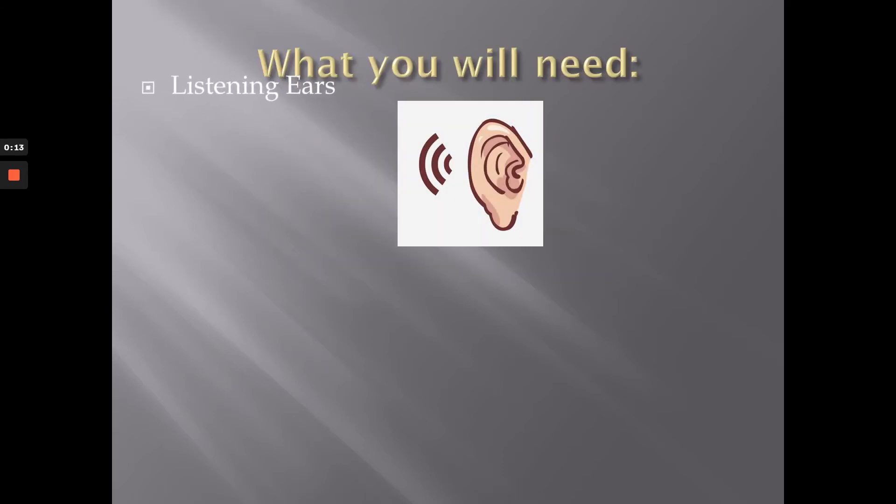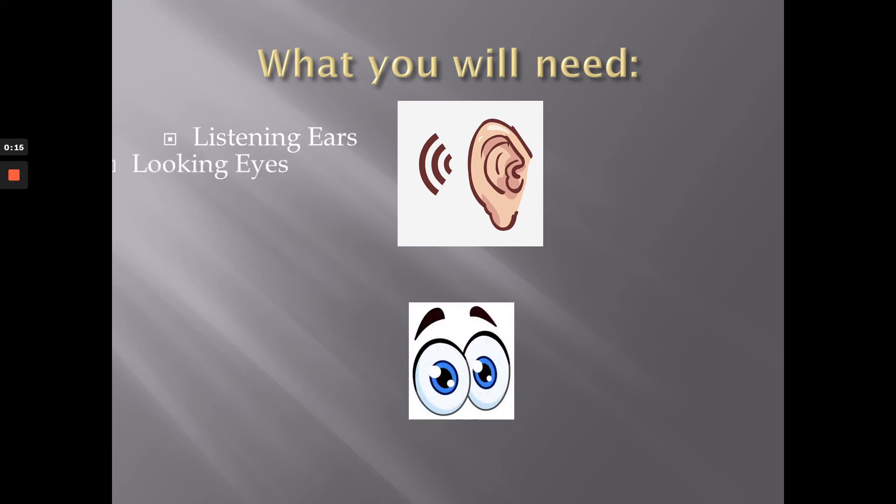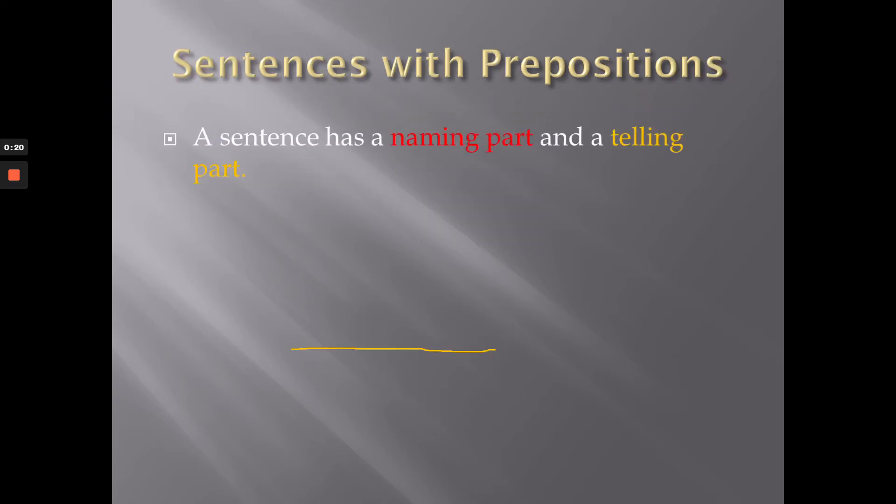Now, all you're going to need are your listening ears and your looking eyes. A sentence has a naming part and a telling part. A naming part tells us who or what the sentence is about, whereas the telling part tells us what happens.